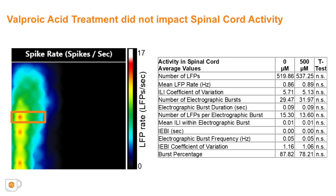Another advantage of this MEA system is simultaneous measurement of brain and spinal cord activity. Data was analyzed and pooled for electrodes in contact with the spinal cord region anterior to the swim bladder. Significant differences in activity were not observed between valproic acid treatment groups, yet overall activity was substantially higher compared to head measurements. This observation of diminished brain activity but not spinal cord activity after valproic acid treatment supports that brain activity differences are not a secondary effect from decreased locomotion.